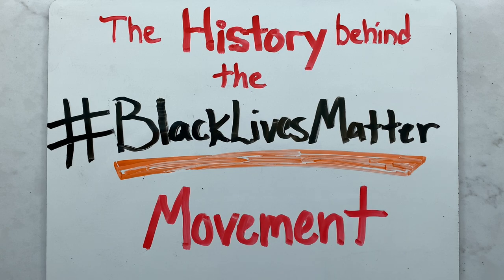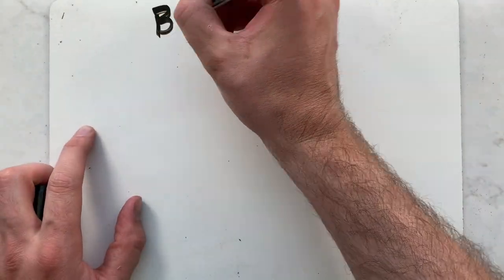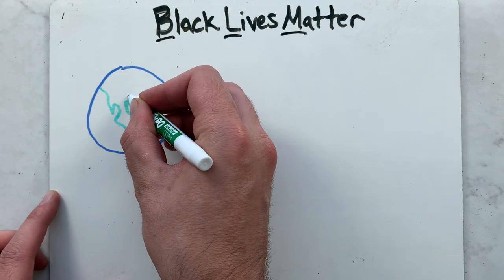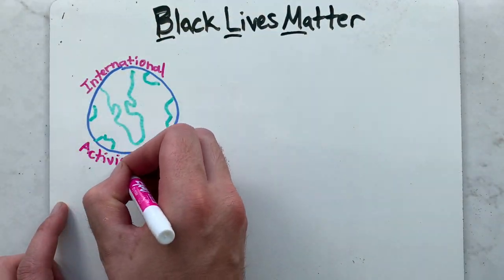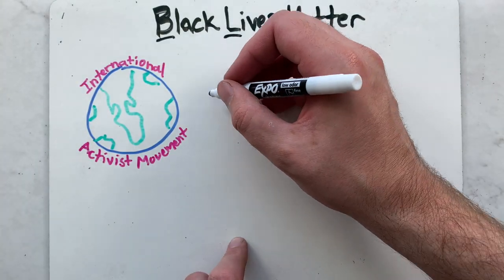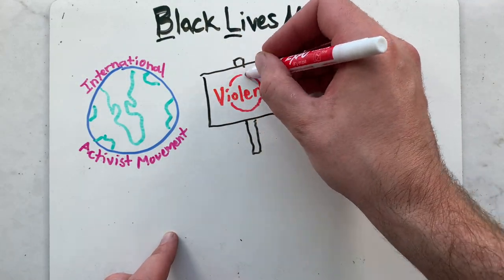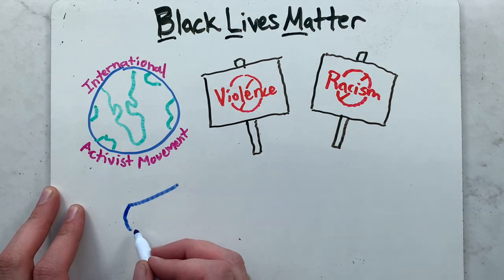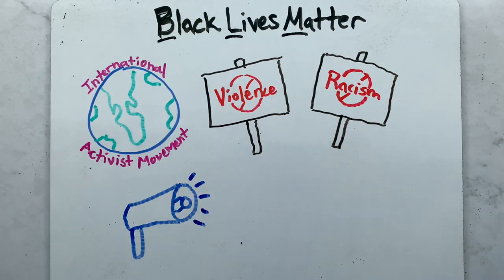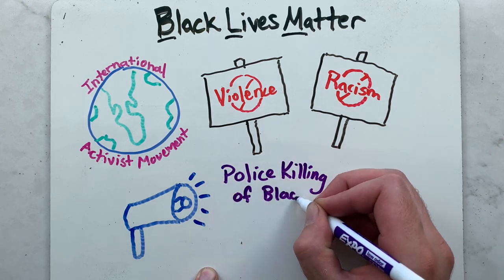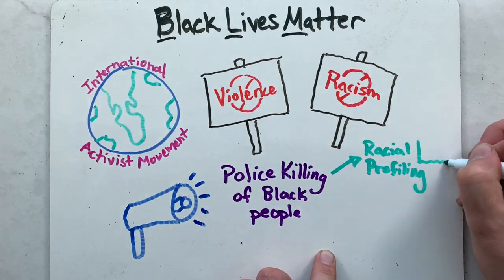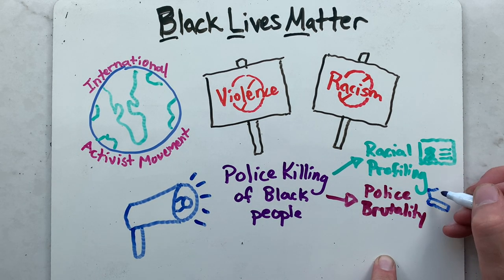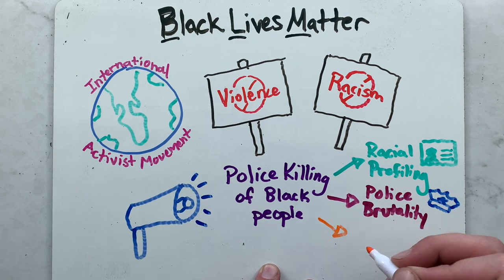Have you ever wondered about the history behind the Black Lives Matter movement? The Black Lives Matter movement is an international activist movement originating in the African American community. There are many goals that this movement is trying to accomplish. The BLM campaigns against violence and systematic racism towards Black people. They regularly hold protests speaking out against police killings of Black people, as well as broader issues including racial profiling, police brutality, and racial inequality in the United States criminal justice system.